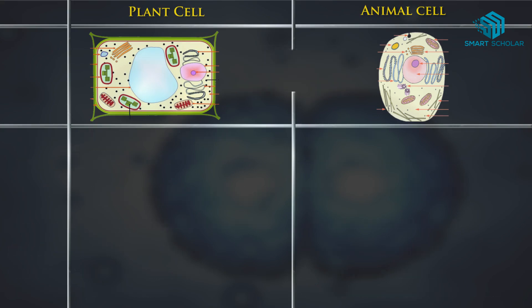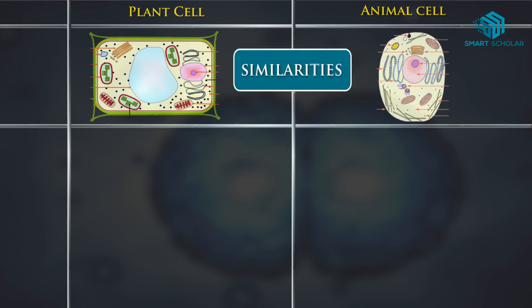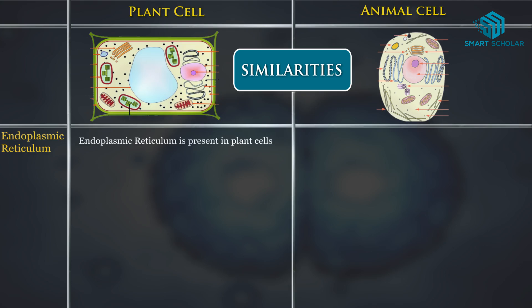Now let's look at the similarities between plant cells and animal cells. Endoplasmic reticulum is present in plant cells, and in the same way, endoplasmic reticulum is present in animal cells too.